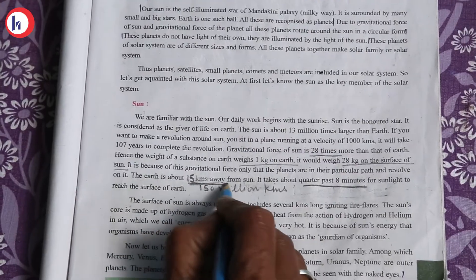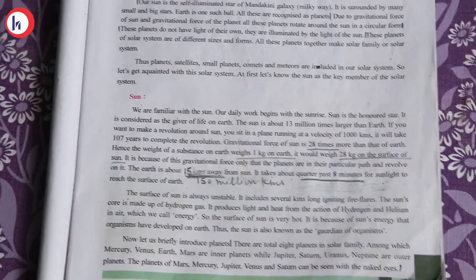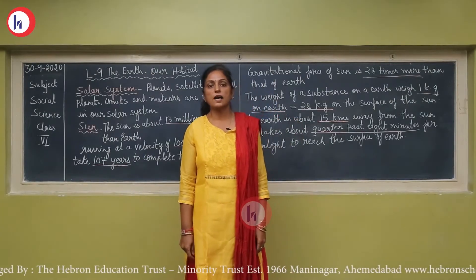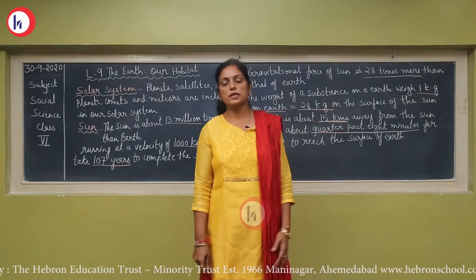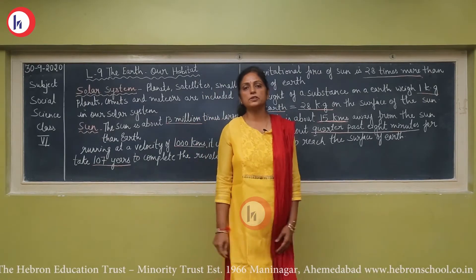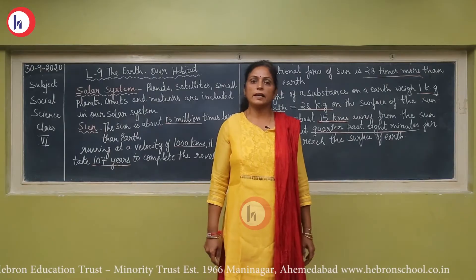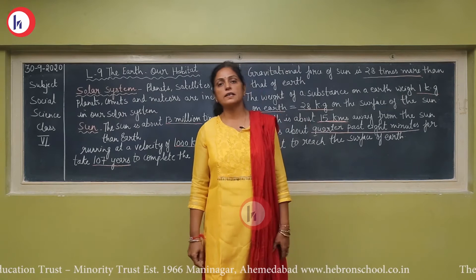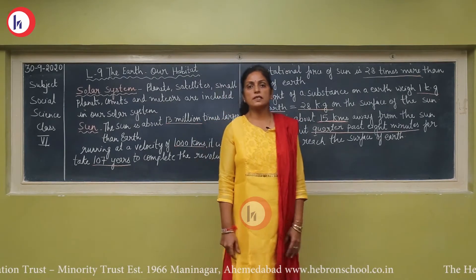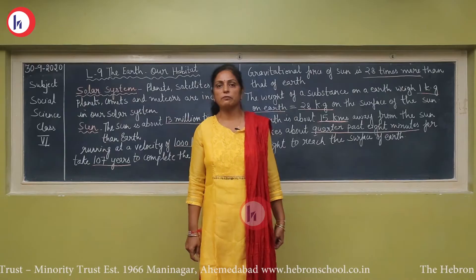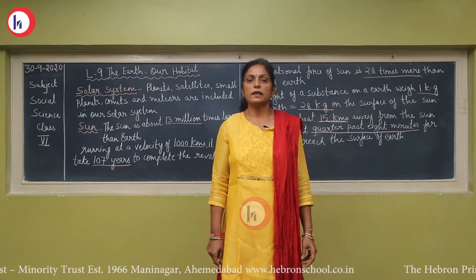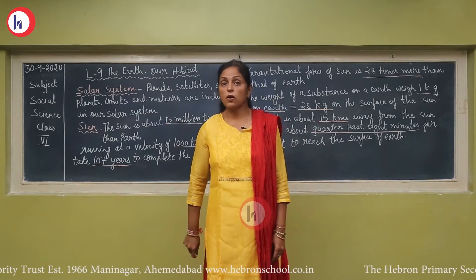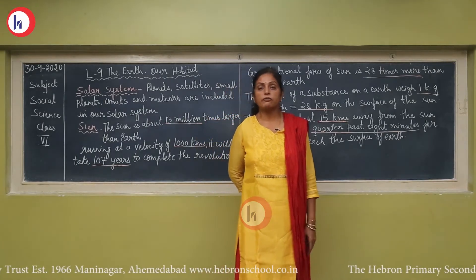The sun's core is made up of hydrogen gas. It provides heat and light from the reaction of hydrogen and helium gas, which we call energy. Due to this energy, organisms have developed on this planet. The sun is also called the guardian of organisms and the giver of life on Earth.